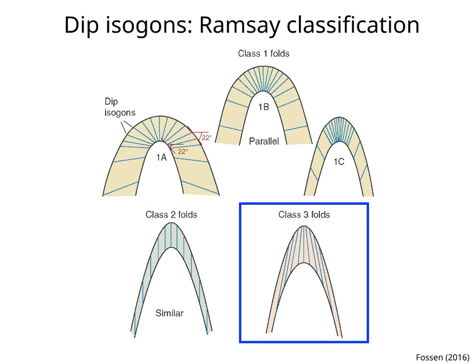Class 3 folds have divergent dip isagons. The curvature of the outer arc is greater than the curvature of the inner arc. The largest true and vertical thickness are at the hinge.